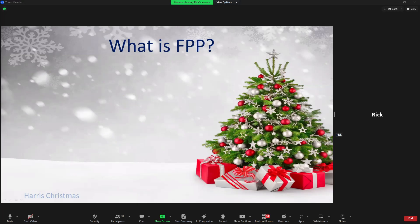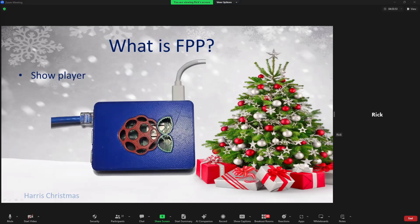So what is FPP? FPP is a software program that has basically two components in one. You have the show player — that's like the conductor of your light show. It tells the controllers what to play, when to play it, and what color to make each light. Obviously you only want one player in your show; you don't want two different devices telling things what to do or it's going to be a mess.